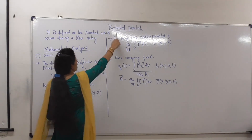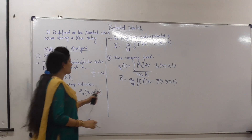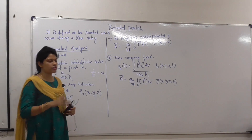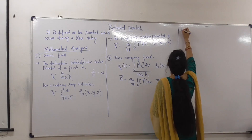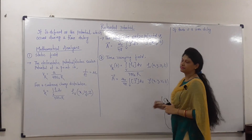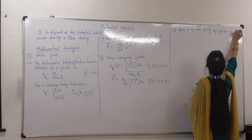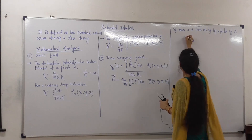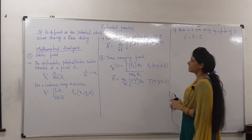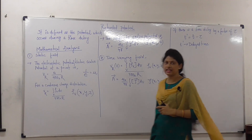Now we will go for the retarded potential. As already stated, when there is a time delay we are going to have the retarded potential. Using the previous formulae, I am going to represent the retarded potential. If there is a time delay by a factor of τ (tau), then T' (T dash) equals the previous time T minus τ. Here T' is your delay time.